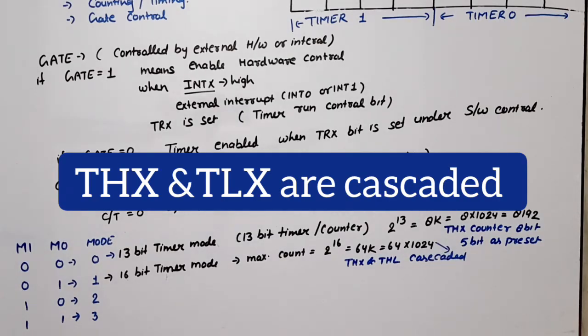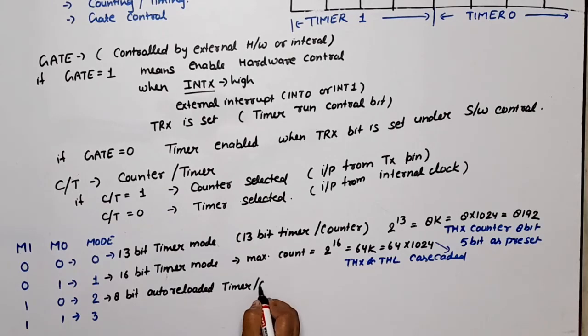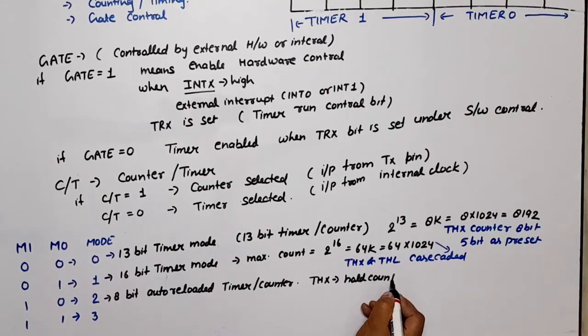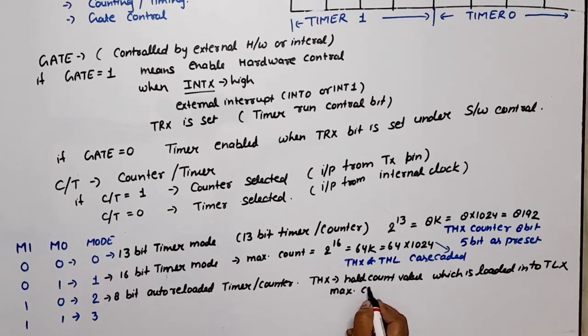Mode 2: in this case, this is an 8-bit auto reload timer/counter. Auto reload means what? THX holds count value which is loaded into TLX. If it has 8-bit count, maximum count is equal to 2 raised to power 8, which means 256, and this is generally used for generating the desired frequency.